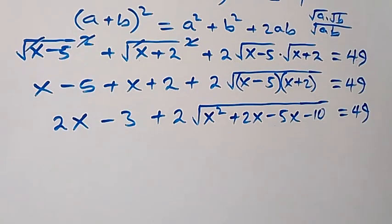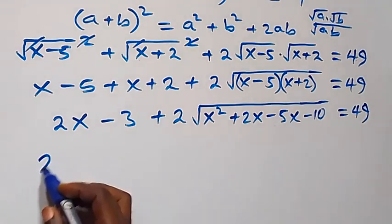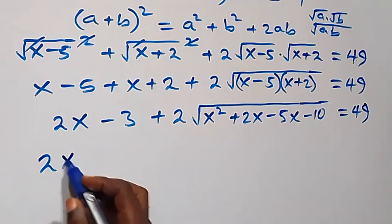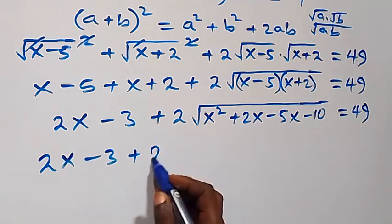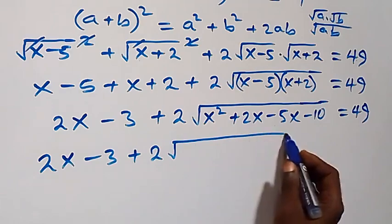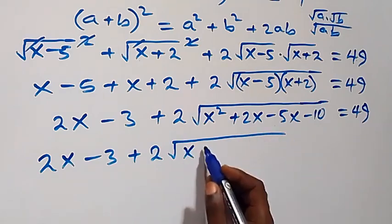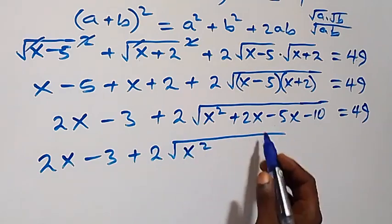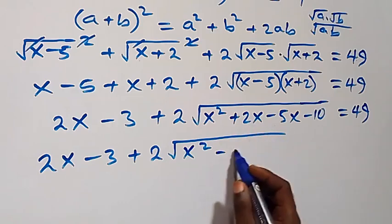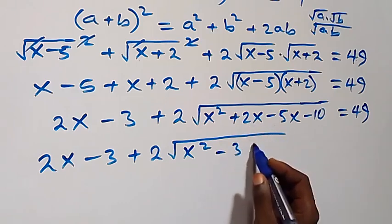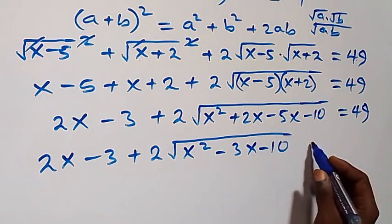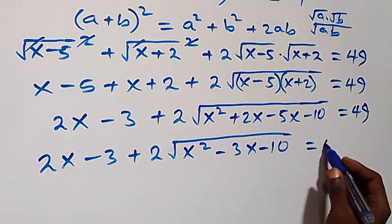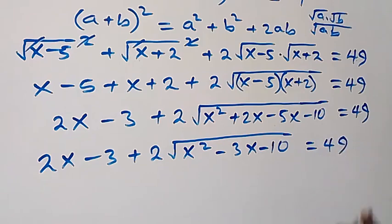This can also be written as: 2x minus 3, plus 2 times square root of x squared minus 3x minus 10, which is equal to 49.